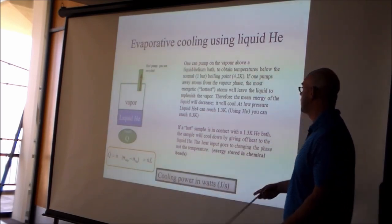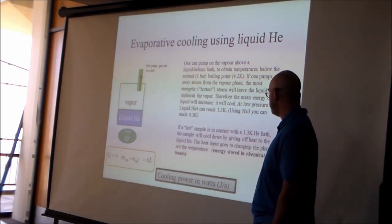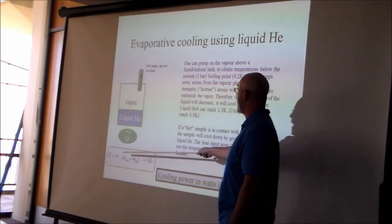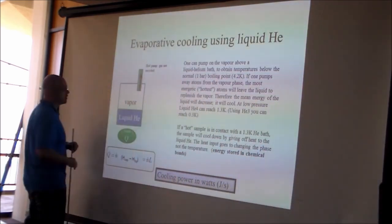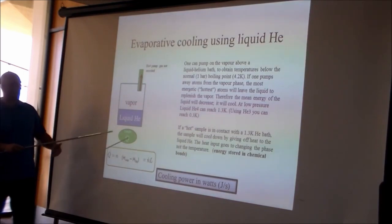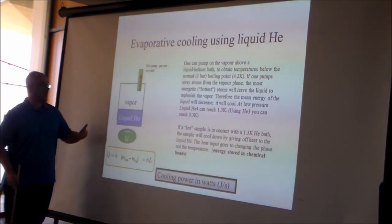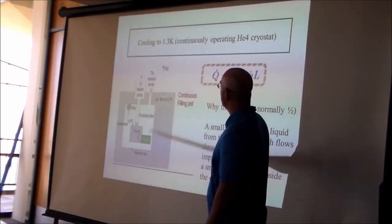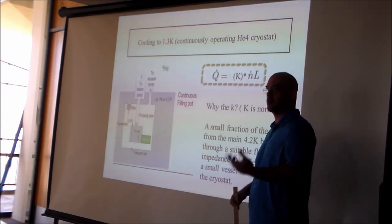Cooling power is the amount of heat per unit time you can remove from a sample, measured in watts. The cooling power is Q̇ = ṅ·ΔH = ṅ·L, where L is the latent heat of vaporization and ṅ is the number of helium atoms passing through the phase boundary per second. This is the working principle of an evaporation refrigerator — you need to understand this before the dilution refrigerator.